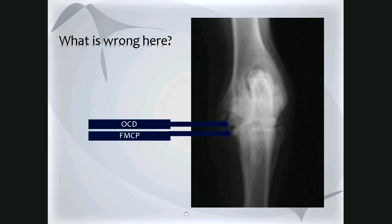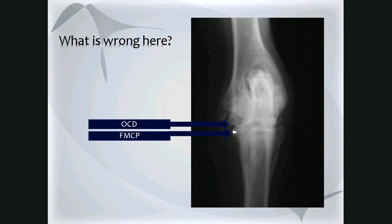It's important to note that OCD and fragmented medial coronoid process often go together, so one must look for both in the same patient. Here's an example: on the medial humeral condyle there is a saucer-shaped defect, and there's a poorly mineralized opacity over the region of the medial coronoid process. This is a case of OCD and fragmented medial coronoid process occurring together.